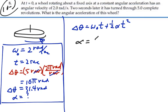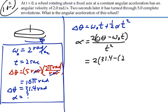So alpha should equal displacement delta theta minus omega not t, all this times two divided by t squared. That's just from the algebra. So we'll have two times 31.4 minus omega not, which is two, times two seconds, all that divided by two squared.